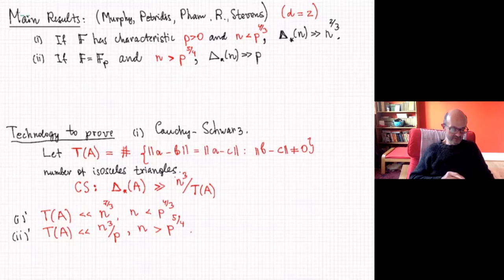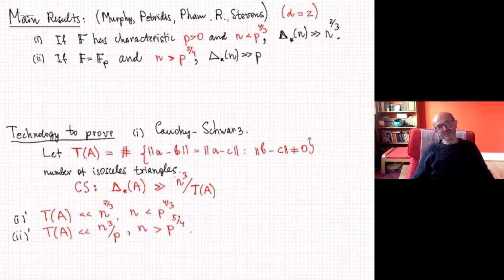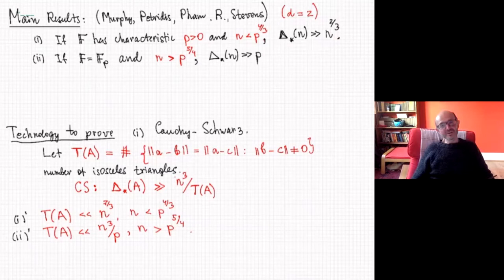For any field of characteristic p — it doesn't have to be a finite field — if N is less than p to the four-thirds, then the number of distinct pinned distances is at least N to the two-thirds. This is the same exponent as Moser obtained for the reals in the 60s. We cannot do better because we don't have a full-strength Szemerédi-Trotter theorem in finite fields, and moreover we don't have any reasonable incidence theorem for circles.